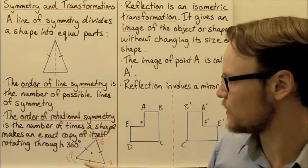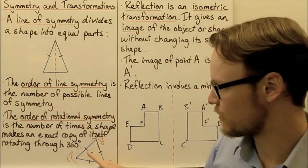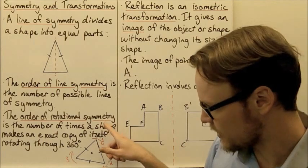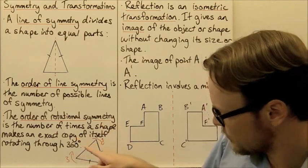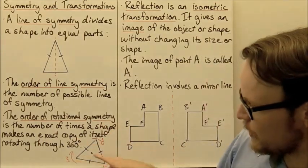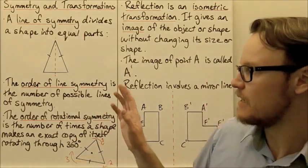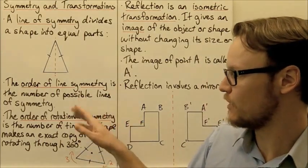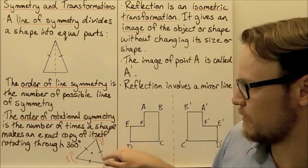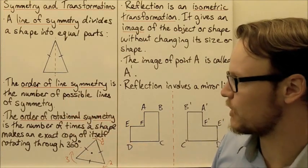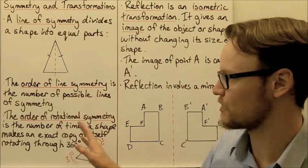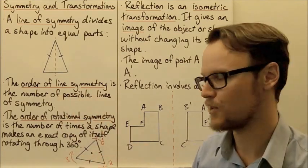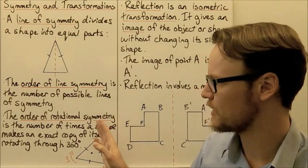So if we were looking at the order of line symmetry of an equilateral triangle, I can have one, two, three lines of symmetry going through it. So the order of line symmetry of an equilateral triangle is three.